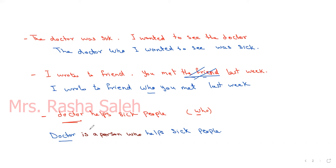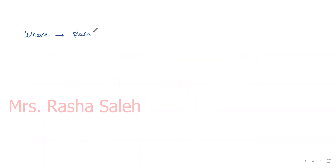Now let's move on to the second relative pronoun: 'where'. We use 'where' as a relative pronoun to link or add information about places.